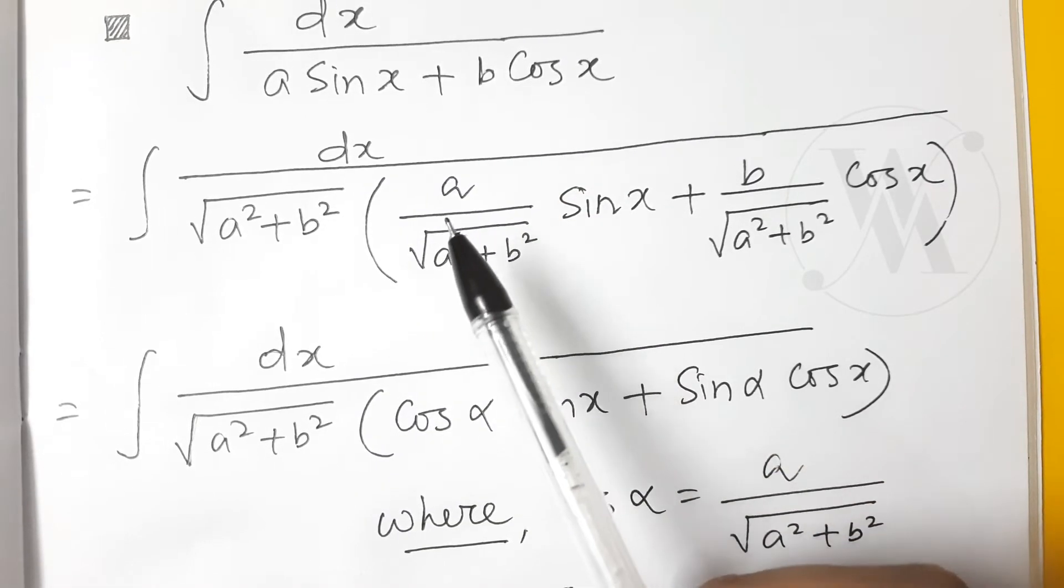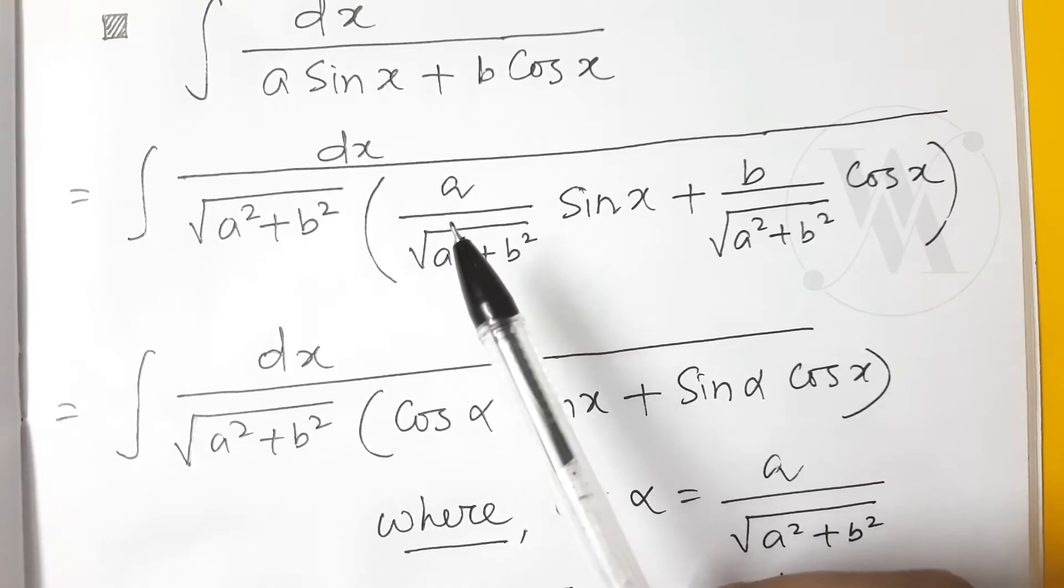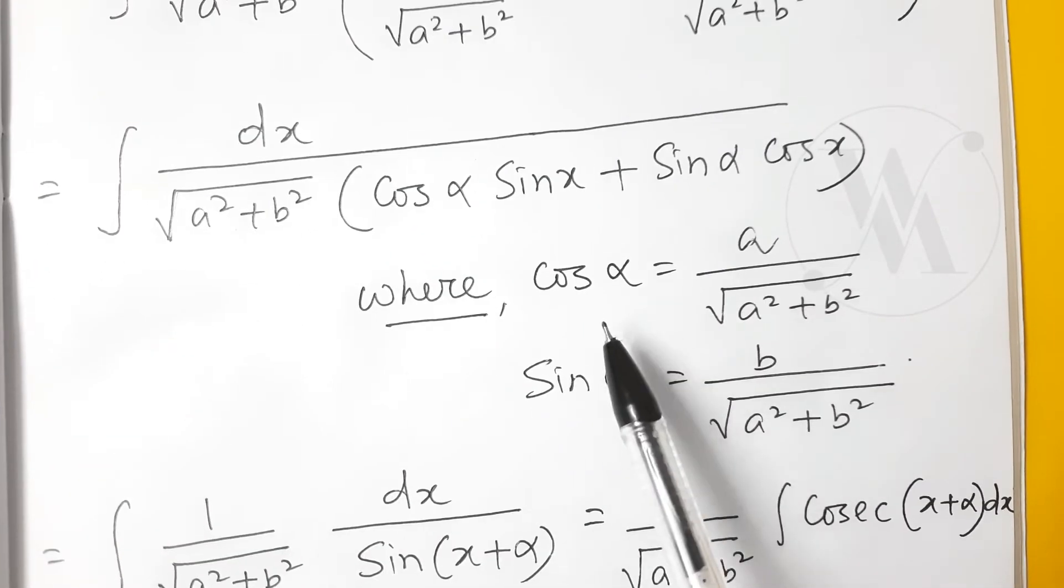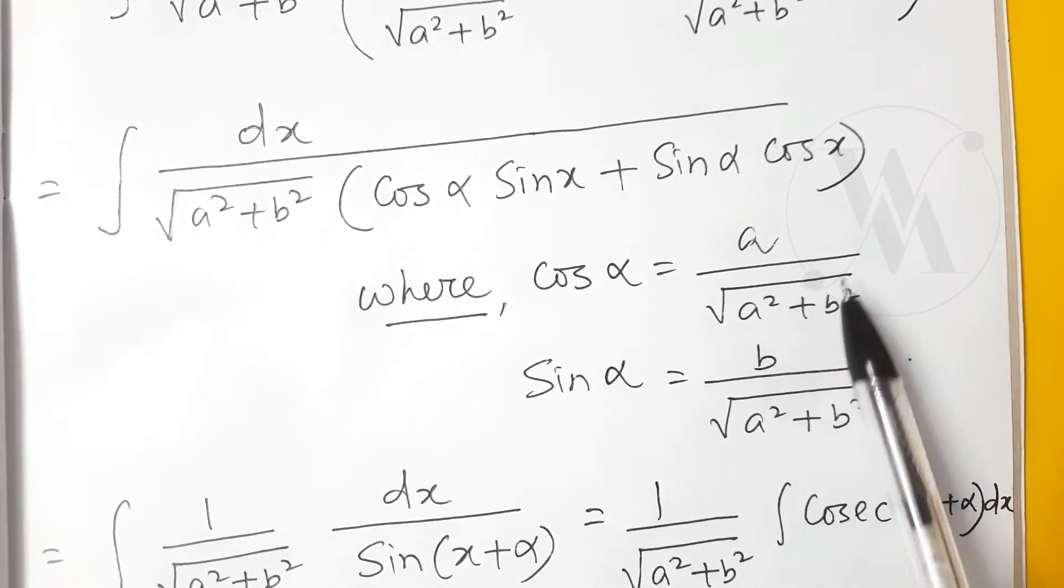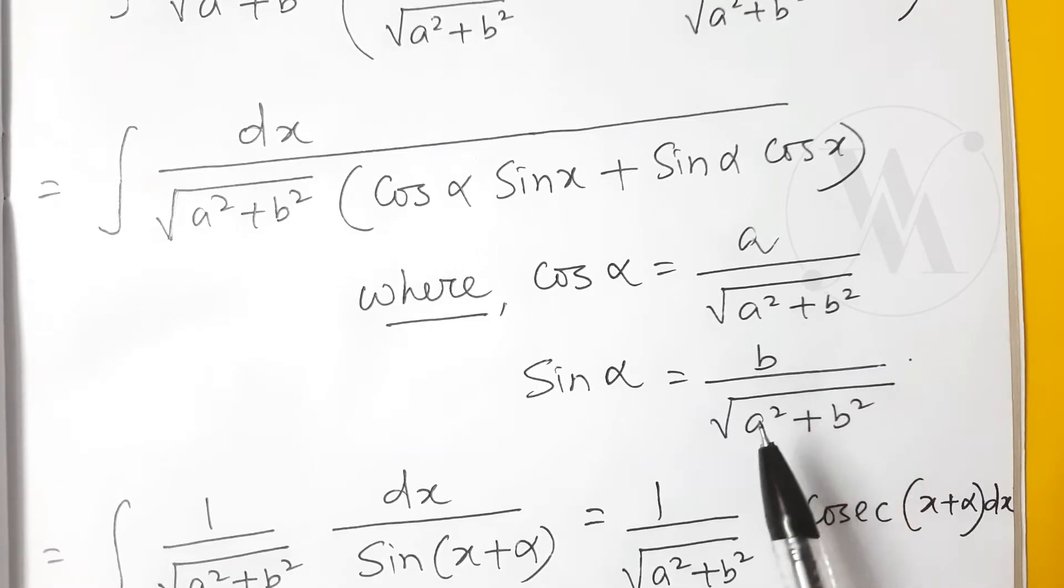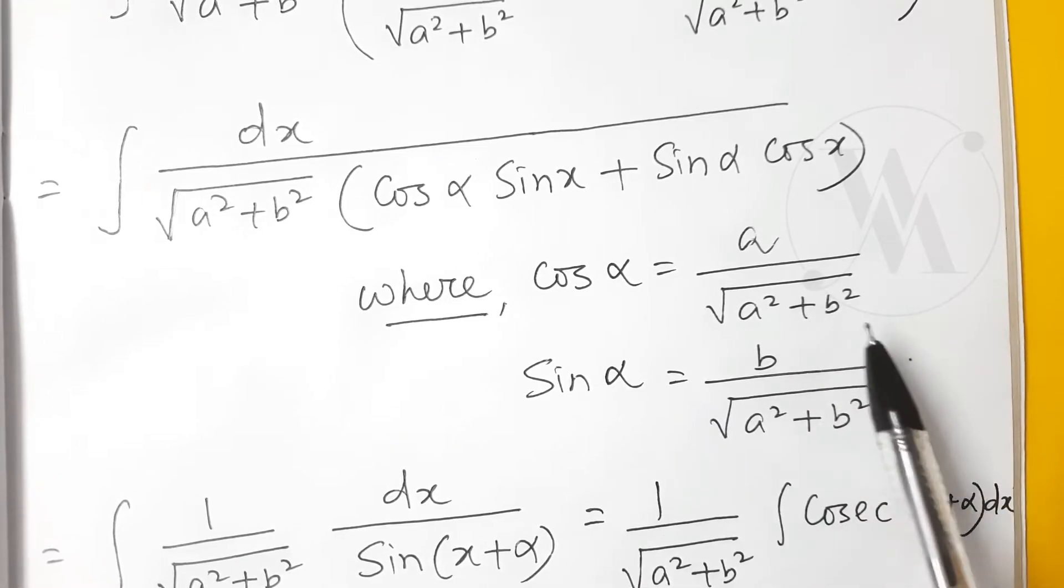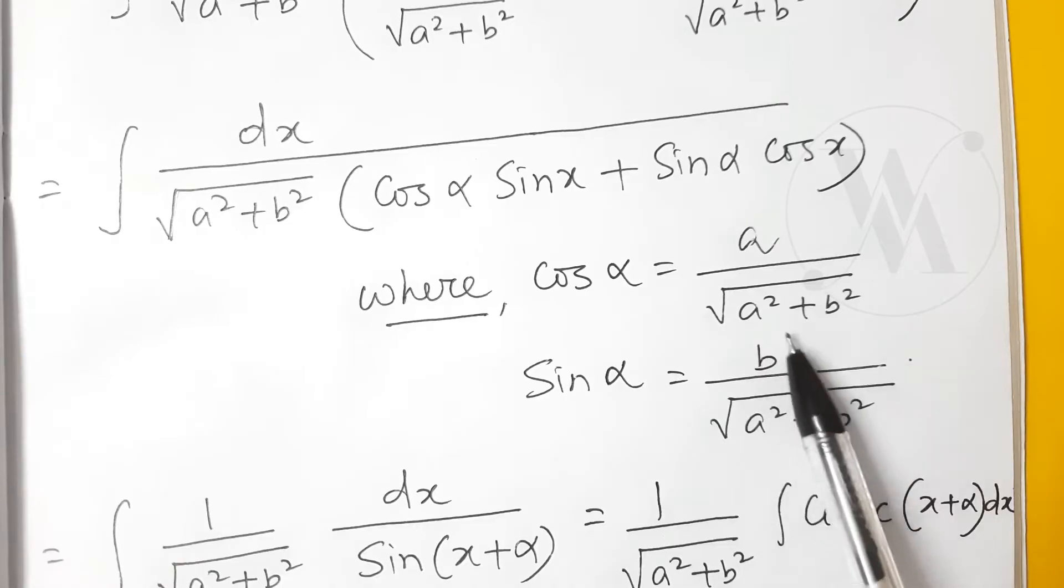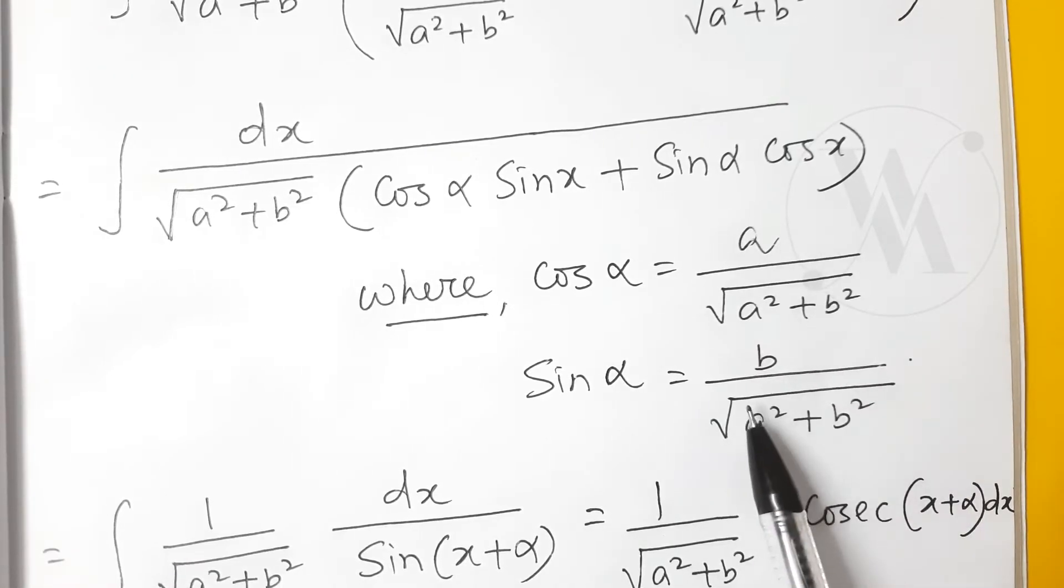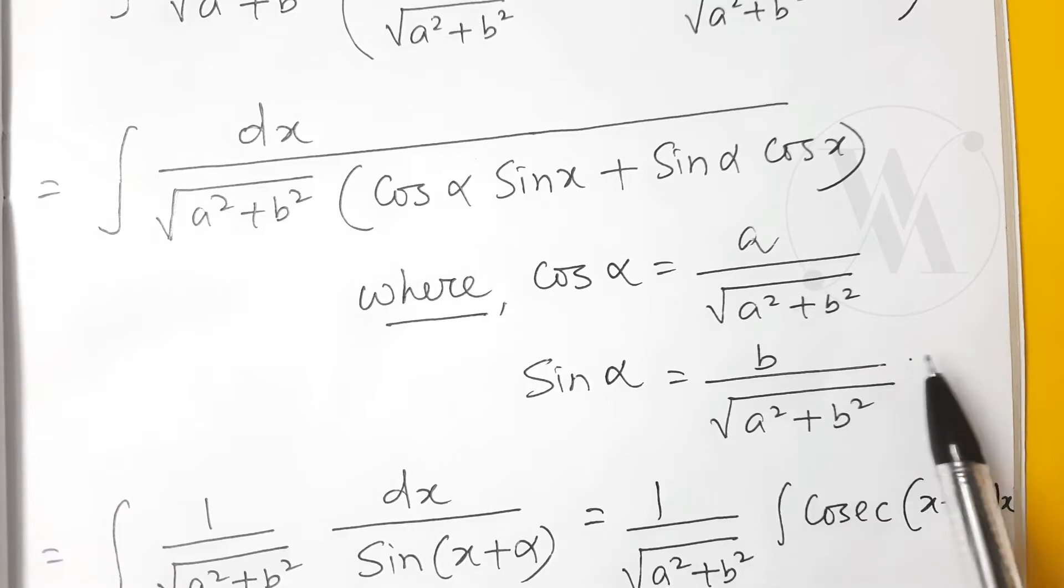But if you take cos alpha as a over root a square plus b square, and sine alpha as b over root a square plus b square, it will always be 1. See, this is a square and this will be b square, so a square plus b square divided by a square plus b square, that will be 1. That's why we are arranging these terms like this.